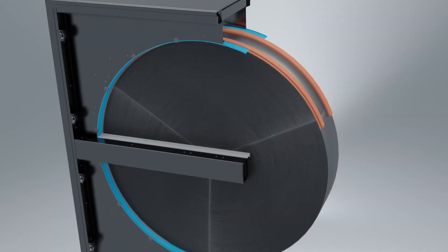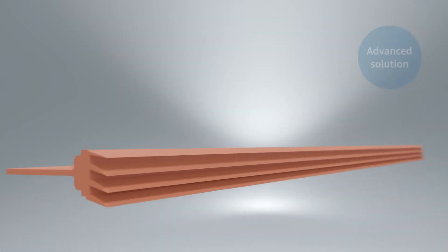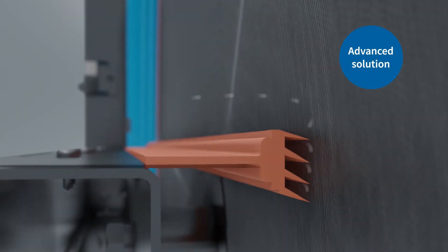In the dividing plane area, there is a special plastic profile with lamella edges that are in contact with the rotor front side.